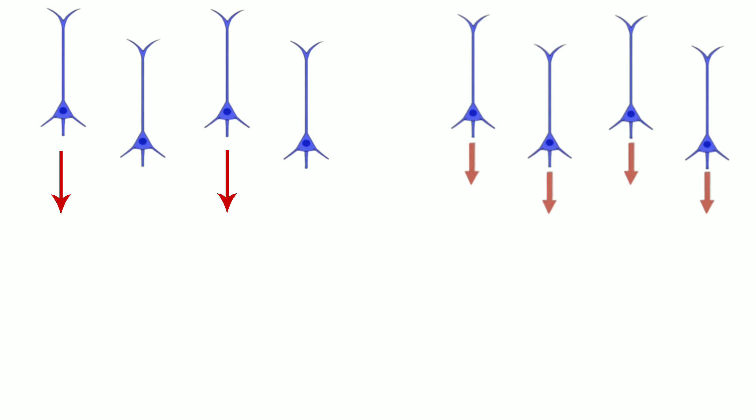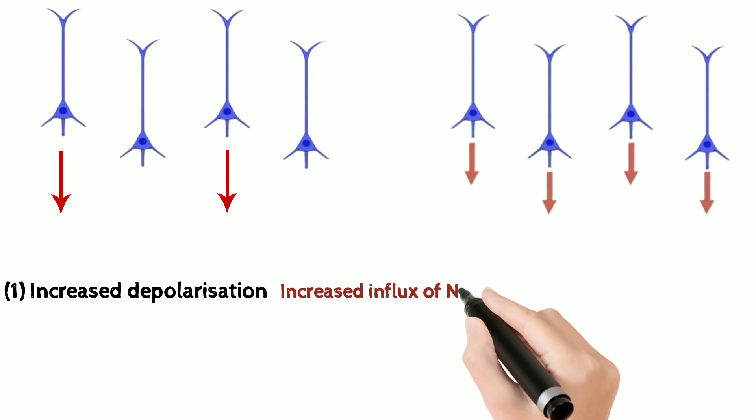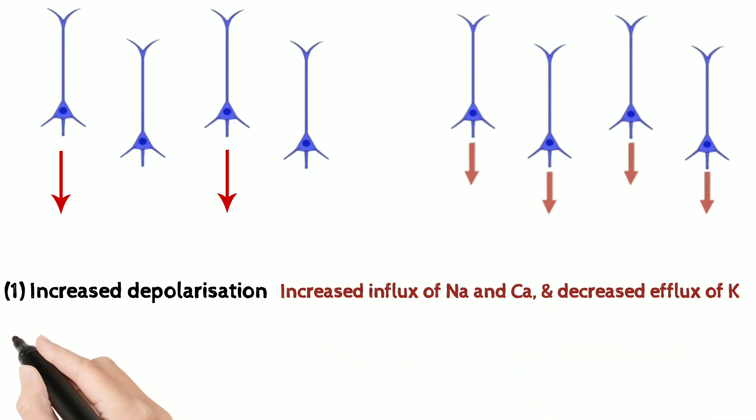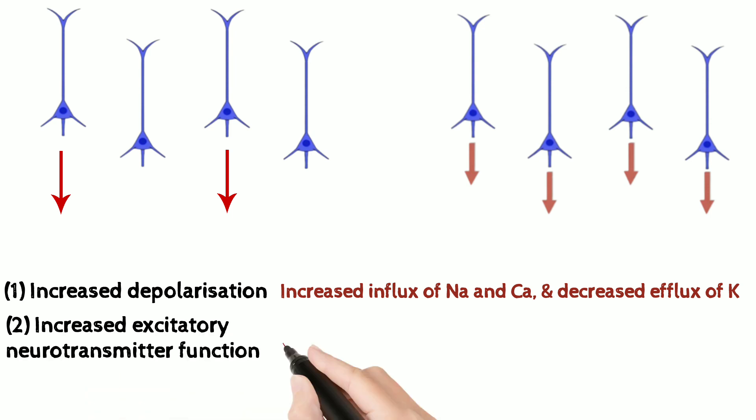This can happen due to increased depolarization, which occurs through increased sodium and calcium influx and decreased potassium efflux, or increased excitatory neurotransmitter function, or due to decreased inhibitory neurotransmitter function.